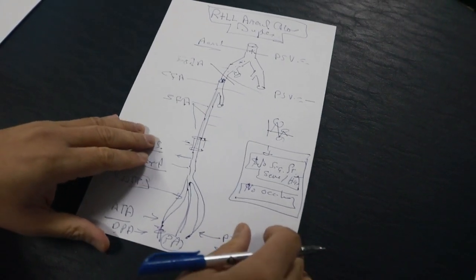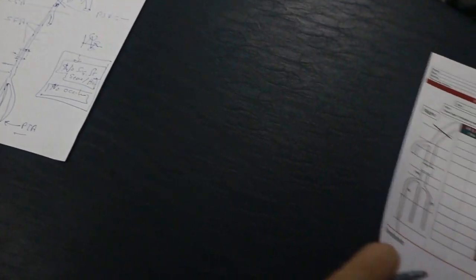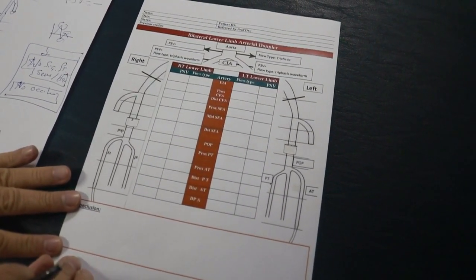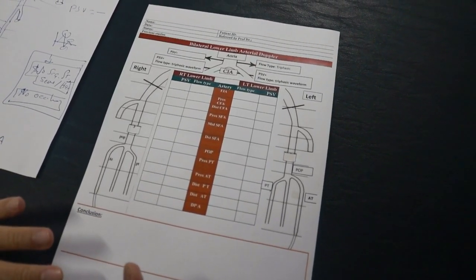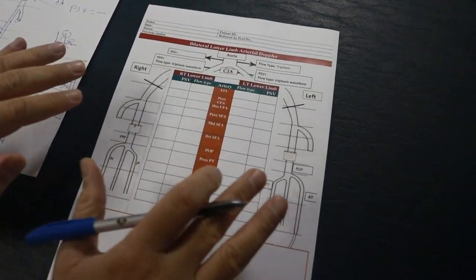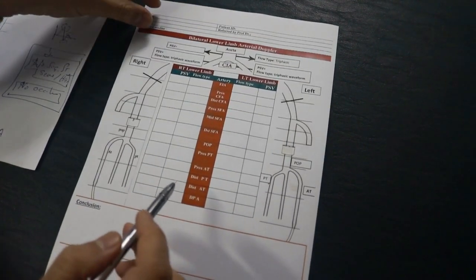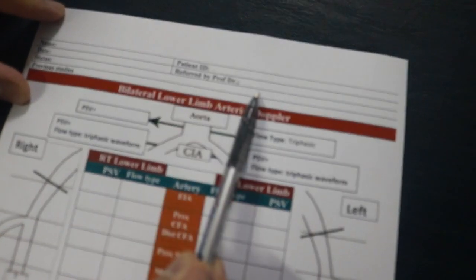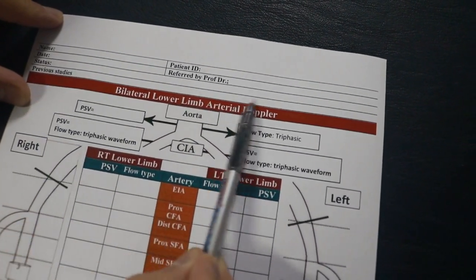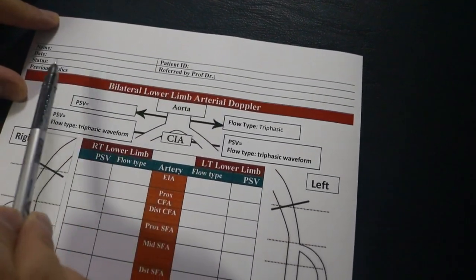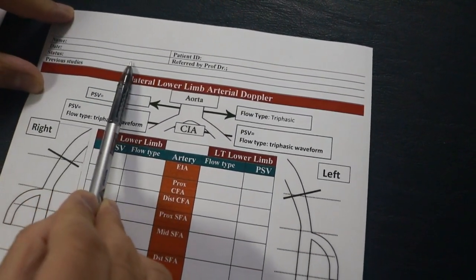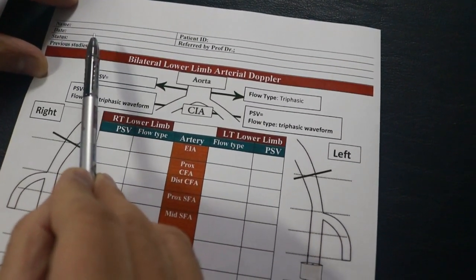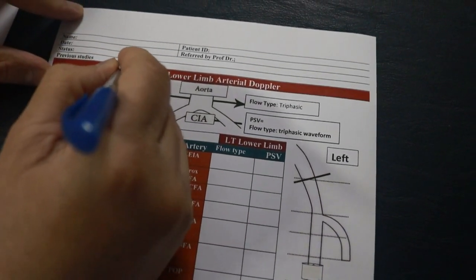Let us go directly to a format dedicated for arterial lower limb doppler study. The case we did, I need to report it in this format. First of all, remember that the name, patient ID, date and referred by status, previous studies. This should represent a new report. The patient is complaining of according to the clinical data, then previous study if there is, or no previous study.